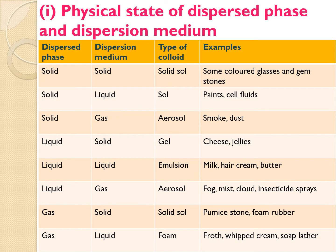Cheese and jellies we usually eat are known as gel — dispersed phase is liquid and dispersion medium is solid. Emulsion is the most important type, where both dispersed phase and dispersion medium are liquid; examples include milk, hair cream, and butter. Fog, mist, cloud, and insecticide sprays are known as aerosol, where dispersed phase is liquid and dispersion medium is gas. Note that smoke and fog are both aerosols, but smoke has a solid dispersed phase whereas fog has a liquid dispersed phase.